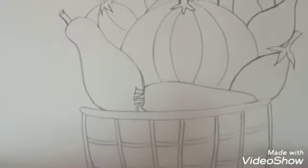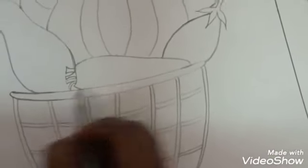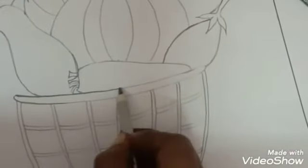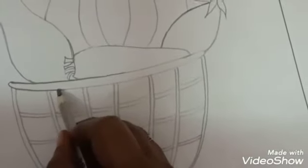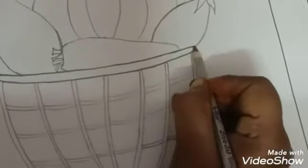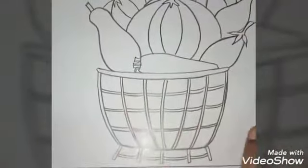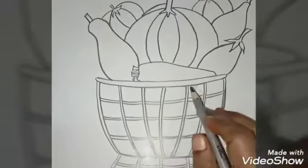Now I am going to darken this vegetable basket. I am going to take 6B pencil for the darkness of this basket. I am going to darken this vegetable basket with 6B pencil.